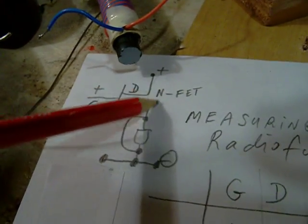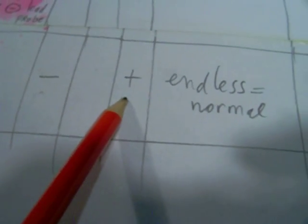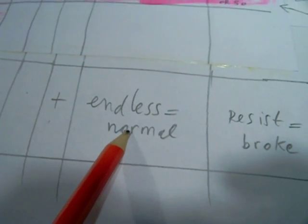Take the charge away with a wet finger, and the resistance gets high here. And this is the final result. Negative to the gate, positive to the source, endless is normal.